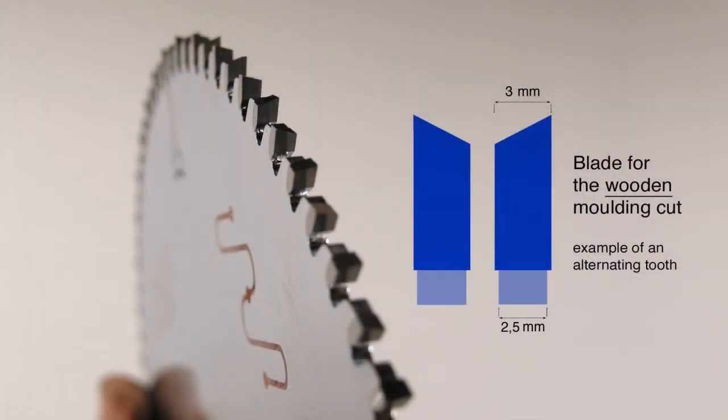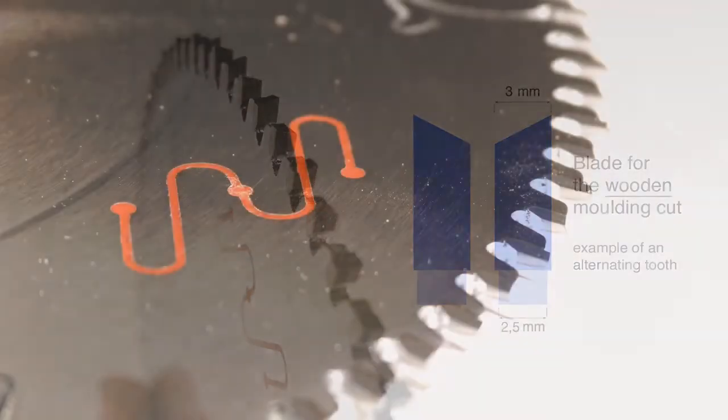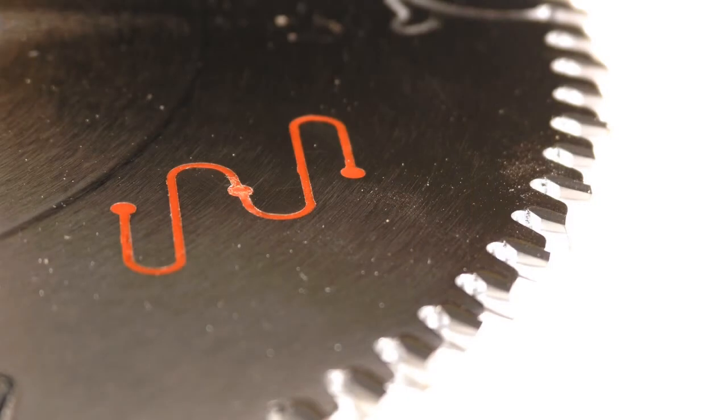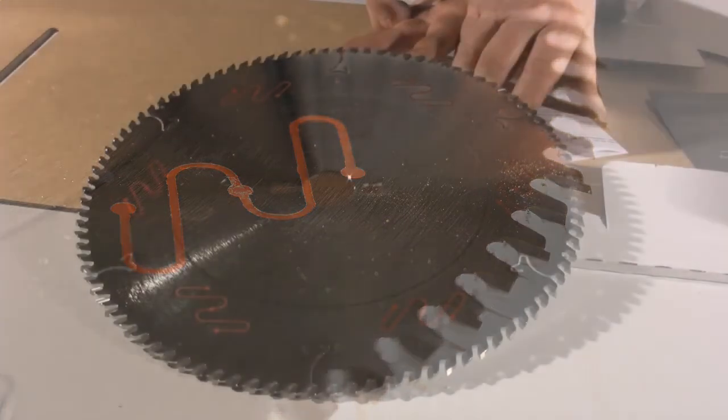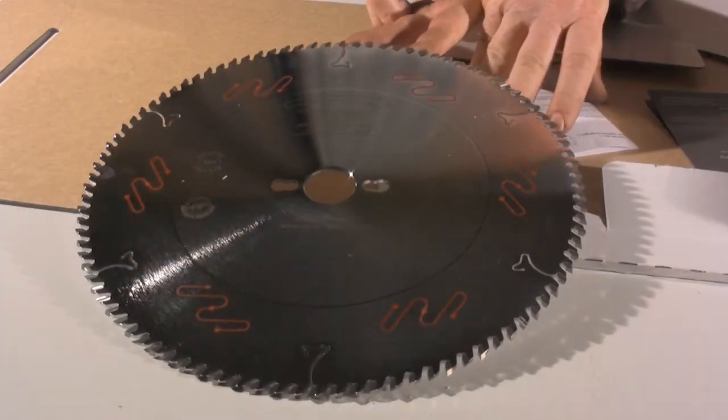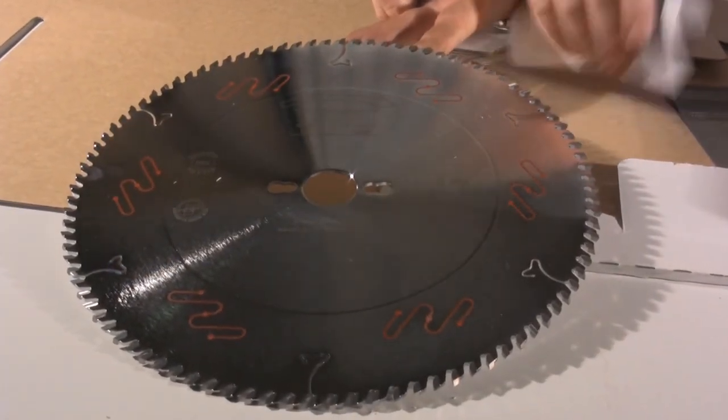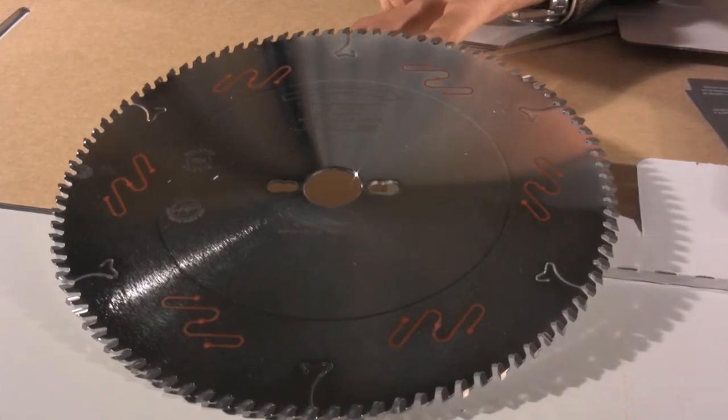They are manufactured by Freud in 45 HRC hardness steel and have 108 alternate teeth. The anti-vibration carvings dramatically reduce noise and vibration. The patented silver ice coating improves the sliding of the blade, lowers operating temperature and protects the blade from rust.